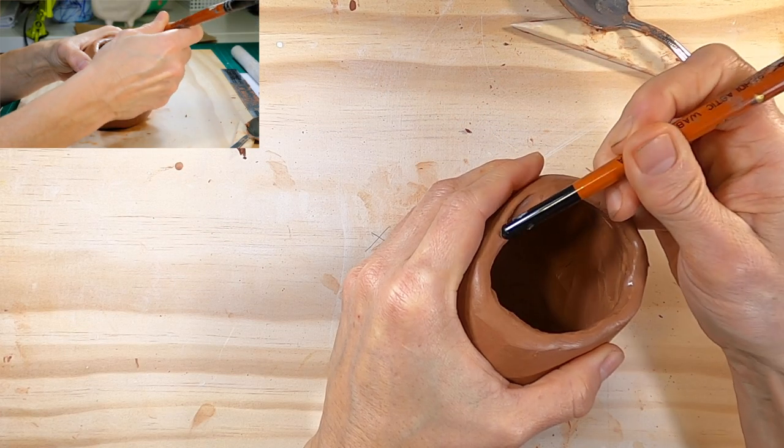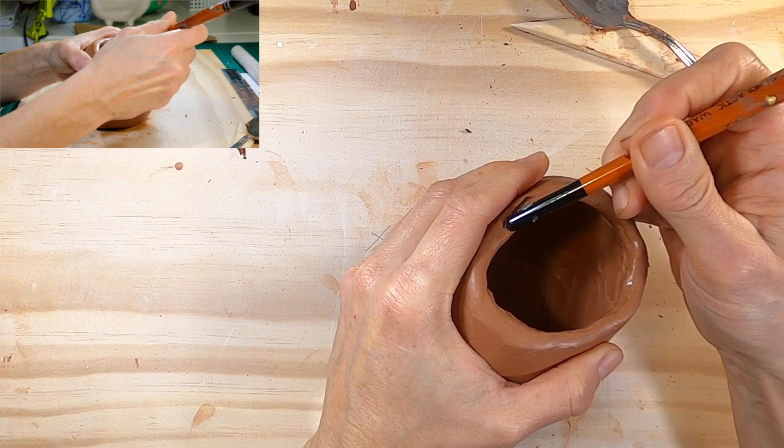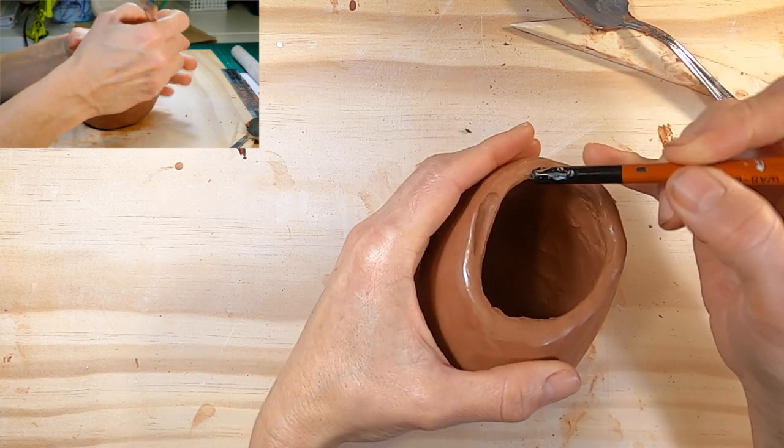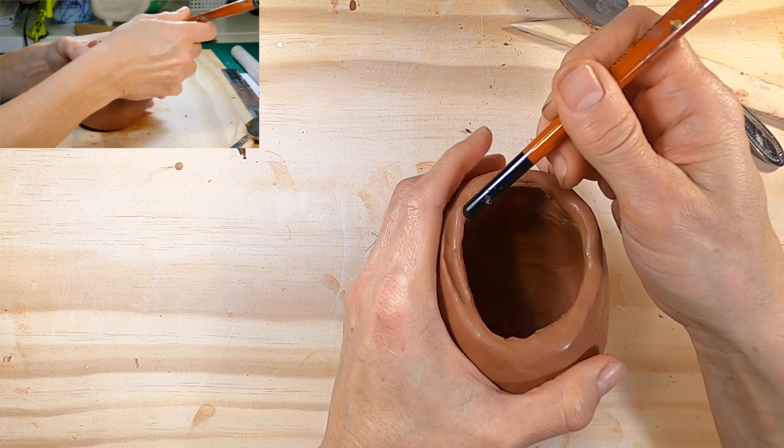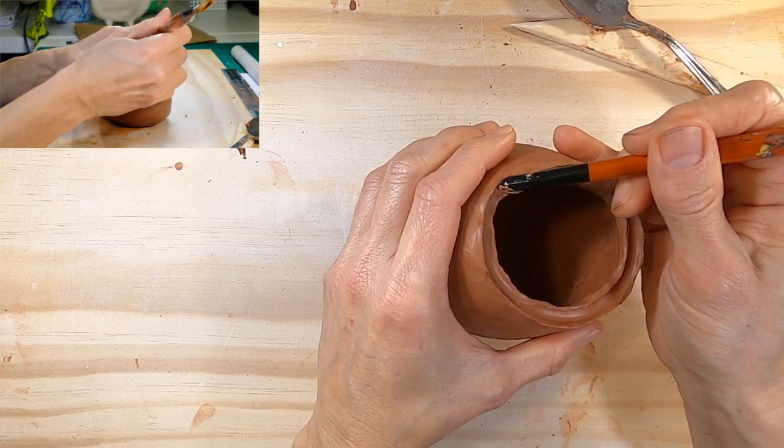Now I'm using the rounded end of a brush to gently press a channel into the lip of the pot. Don't press too hard and support the side of the lip with your other hand. Now there's a little groove to put the rope into.